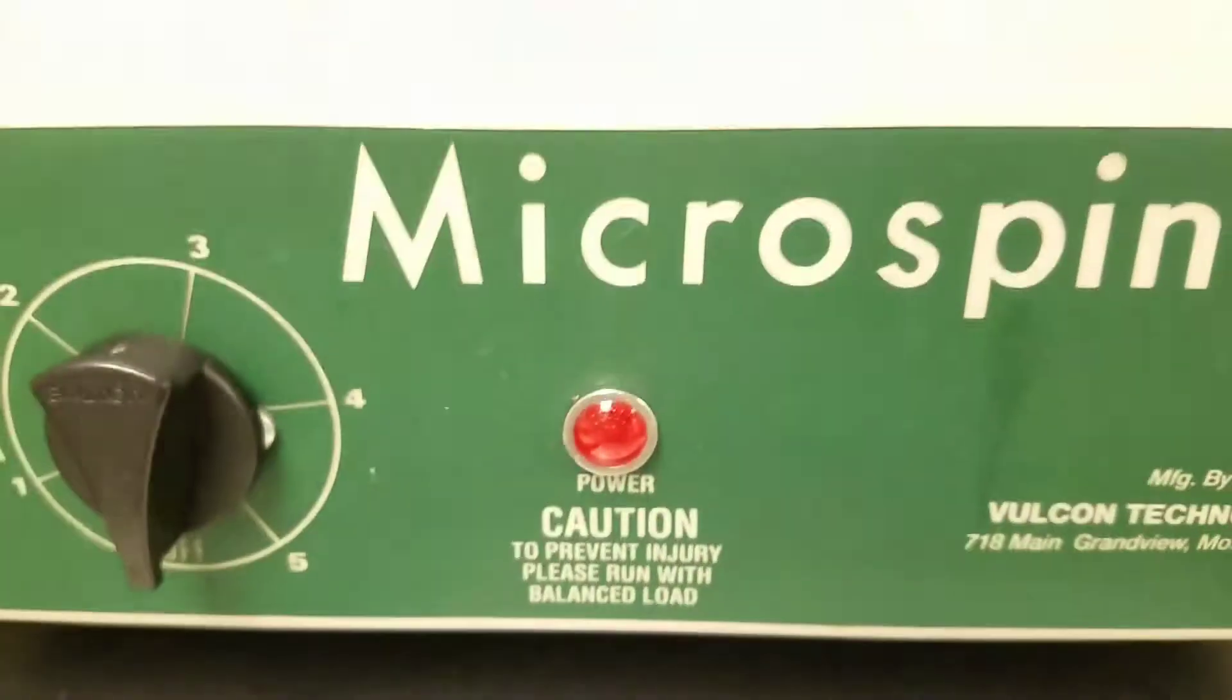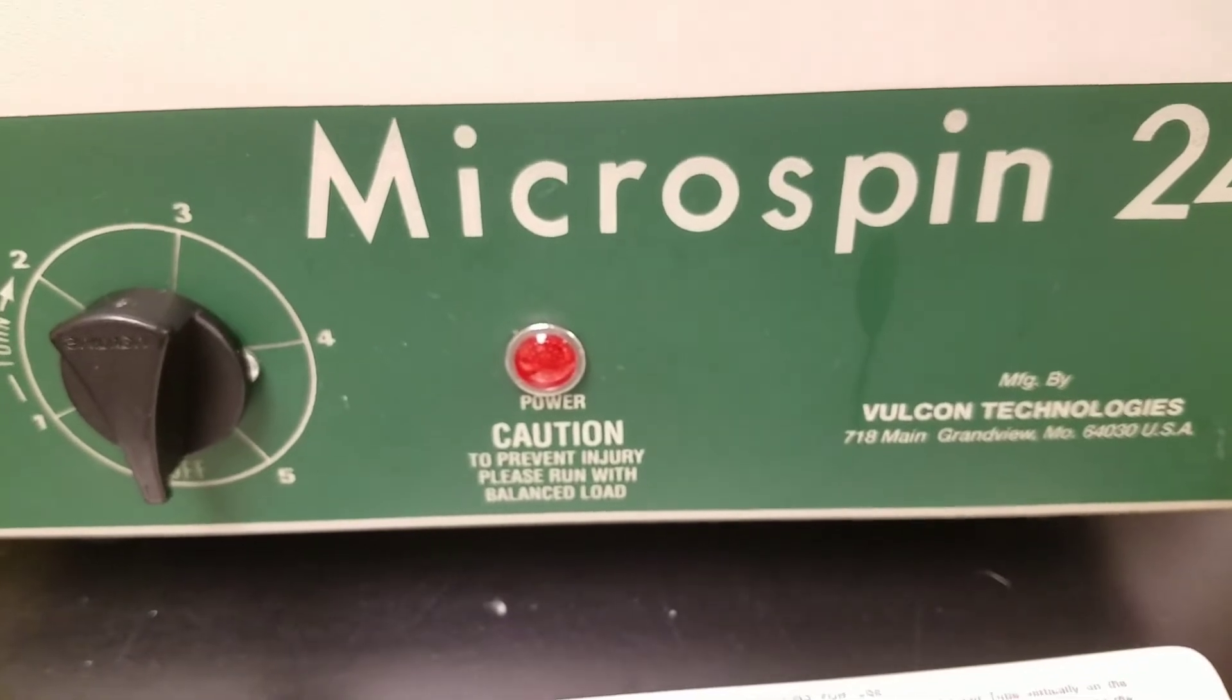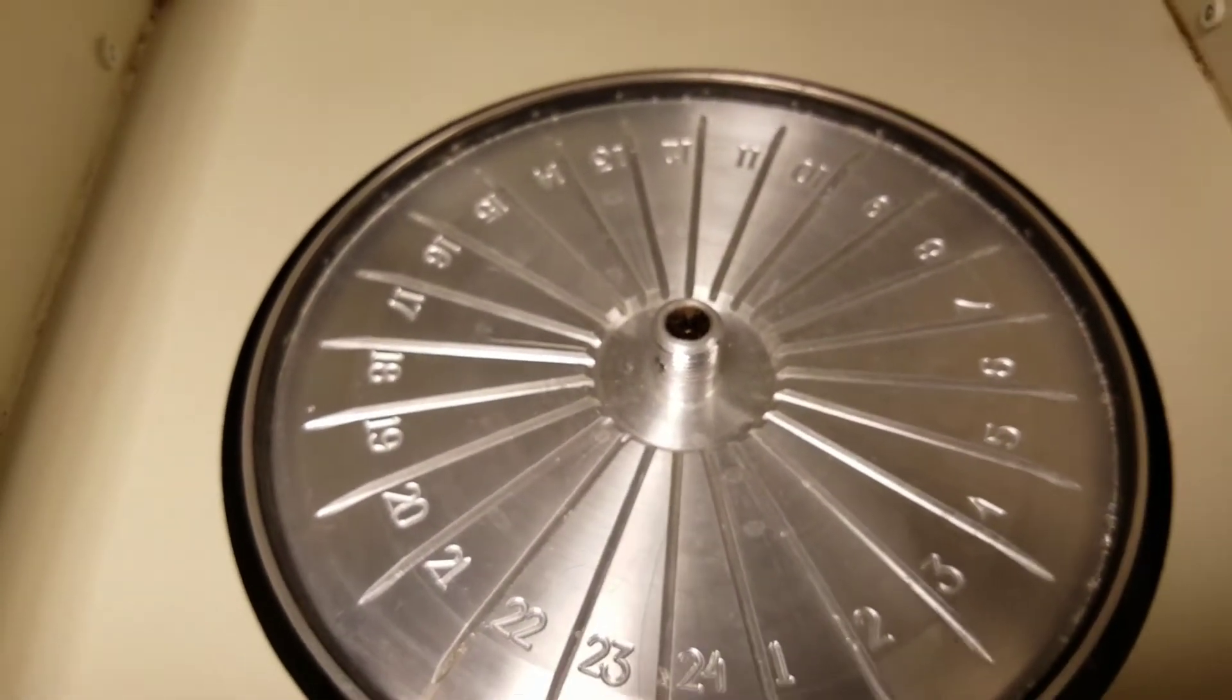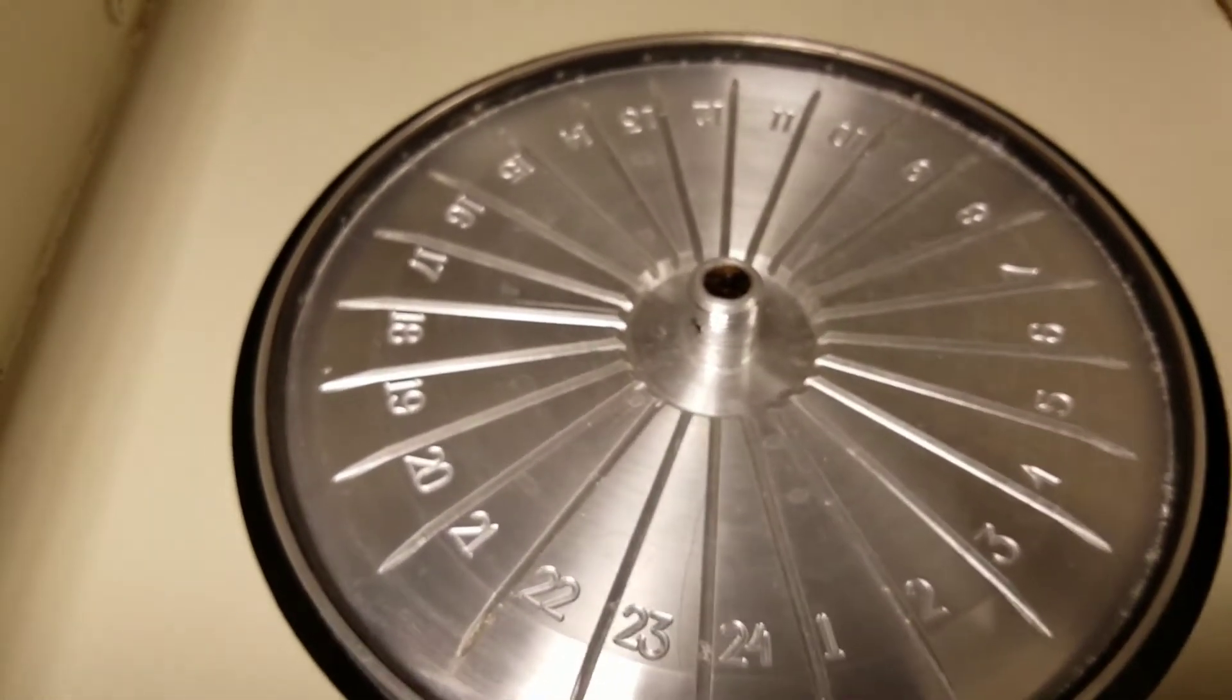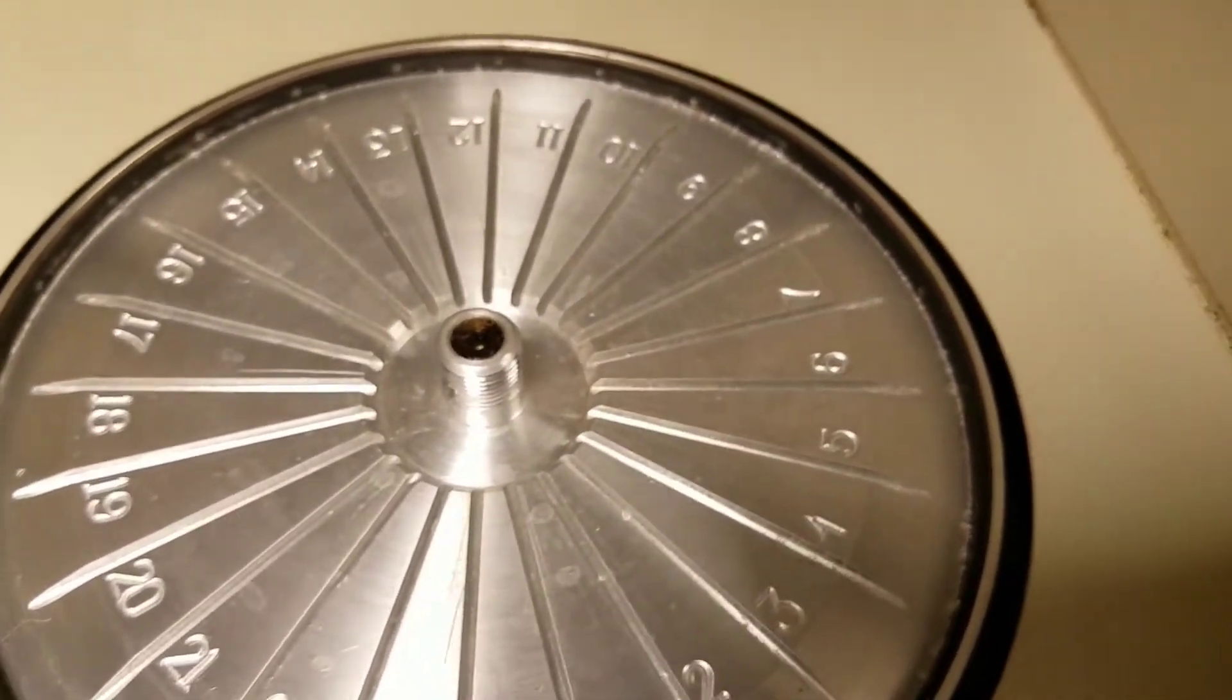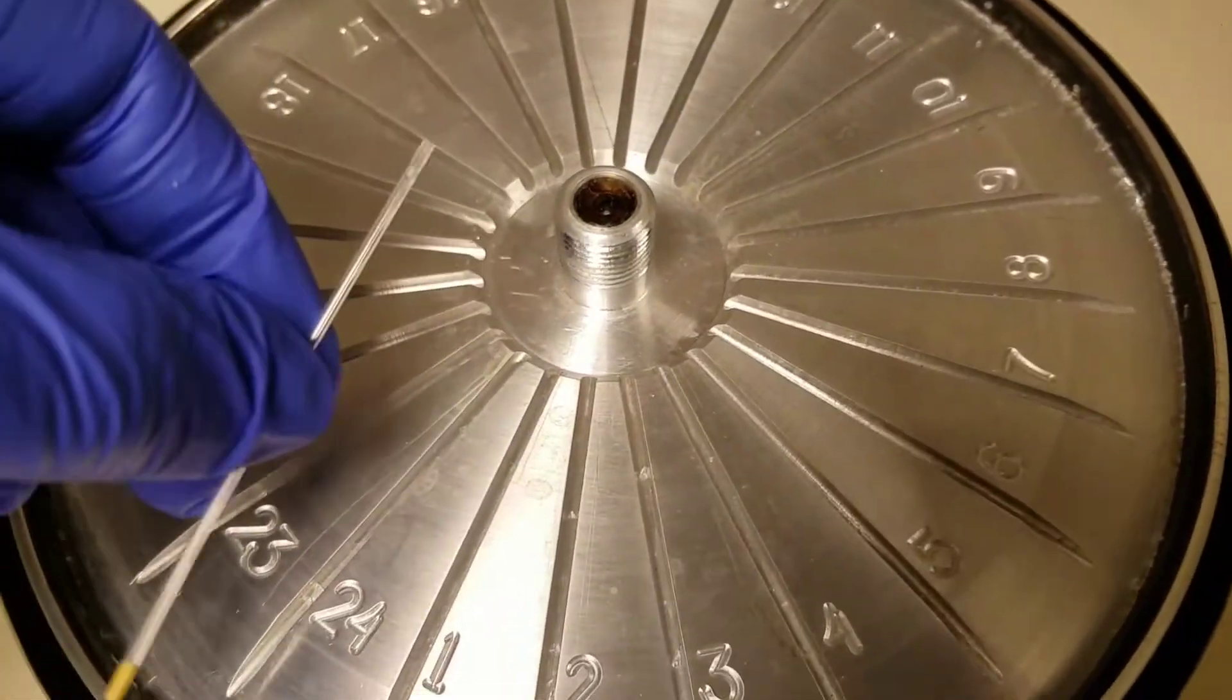You'll also need some kind of centrifuge that will spin your micro-hematocrit tubes. And this is what ours looks like. You always want to make sure your micro-spin or whatever kind of centrifuge you have is balanced.